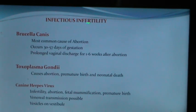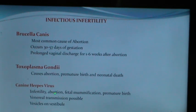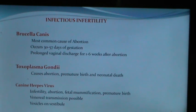Regarding infectious infertility, Brucella canis is the most common cause of abortion in bitches, occurring at 30 to 57 days of gestation with prolonged discharge for 1 to 6 weeks after abortion. Toxoplasma gondii causes abortion, premature birth, and neonatal deaths. Canine herpes virus causes infertility, abortion, fetal mummification, premature births, and venereal transmission is possible, with development of vesicles on the vestibule.